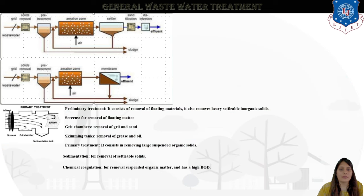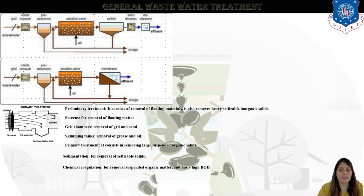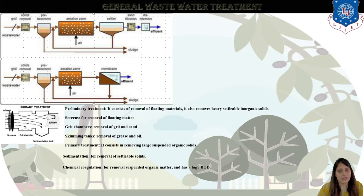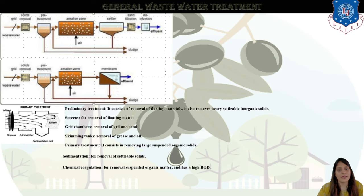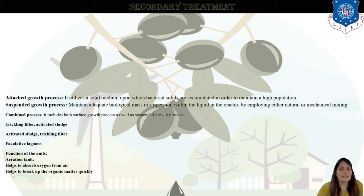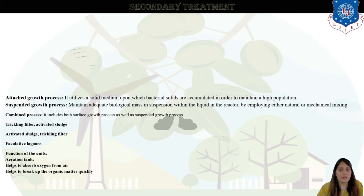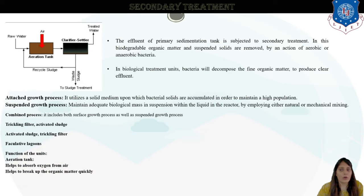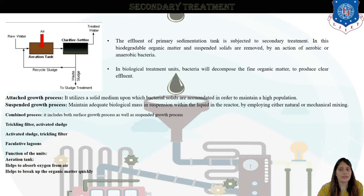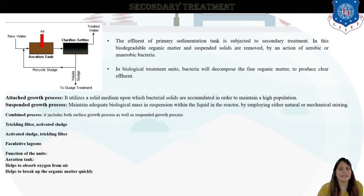This is how the primary and preliminary treatment and sedimentation work in the general wastewater treatment plant. Next we move to the secondary treatment. In secondary treatment, you can see raw water with aeration applied, and we have the clarifier and the settler.